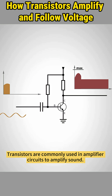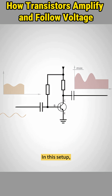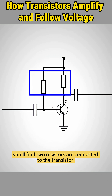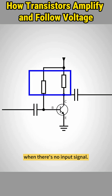Transistors are commonly used in amplifier circuits to amplify sound. Here's how it works. In this setup, you'll find two resistors connected to the transistor. These resistors provide bias voltage that keeps the transistor in an active or standby state when there's no input signal.